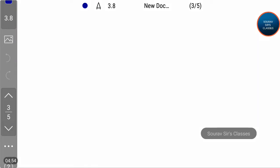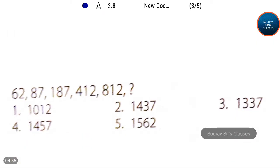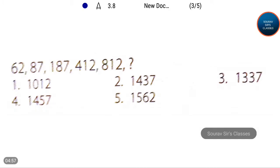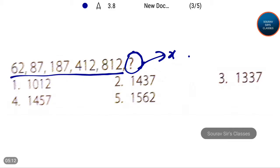Let's go to the next question. Here is another series and the last term is missing, so let's denote this term as x. The series is 62, 87, 187, 412, and 812, and we have to find the next term. Five options are given, so let's start.